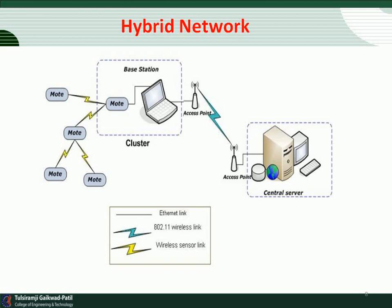Even though WSNs have more constraints than other wireless networks — for example, sensor nodes in terms of energy, processing, transmission range, and bandwidth — routing from a source base station to a destination base station can be accomplished by using MANET. The hybrid network is the best wireless sensor network in which we can improve the energy efficiency and increase the network lifetime.